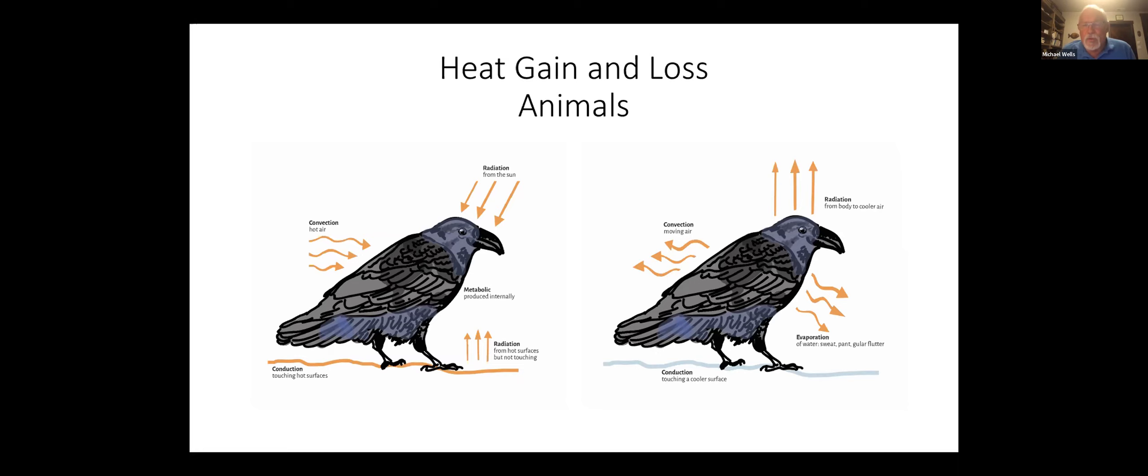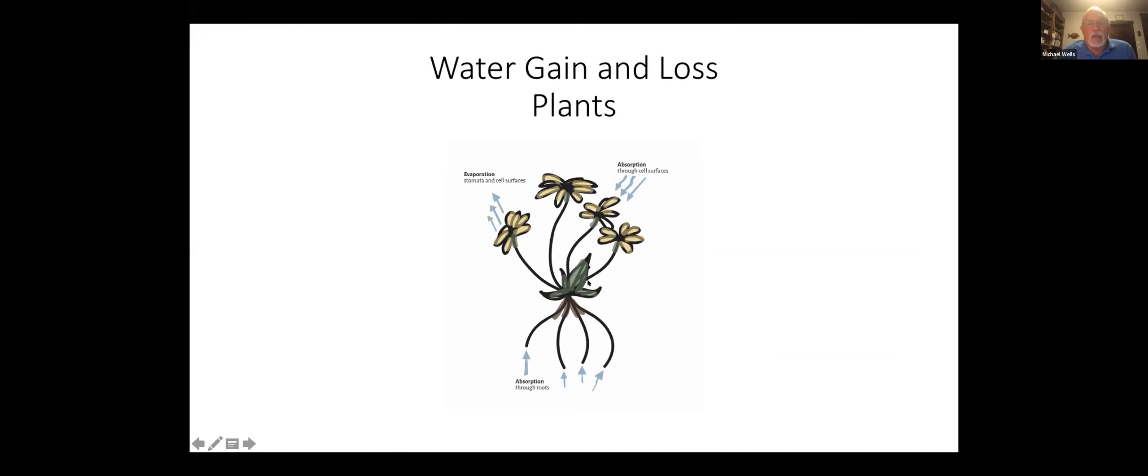The most effective way for an animal to do it is through evaporation. In some mammals, that's by sweating. In some birds, it's by what we call gular flutter, which means they flutter the tissues of their mouths and beak and throats. Water evaporates from it, and they give off heat. We talk about water gain and loss in plants. Plants absorb water through their roots, but also through their vegetation and bodies or stem cells. They lose water through evaporation from their leaf surfaces, but also from transpiration linked to photosynthesis.